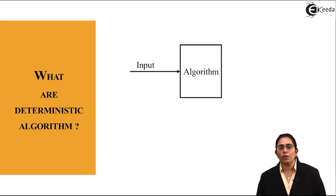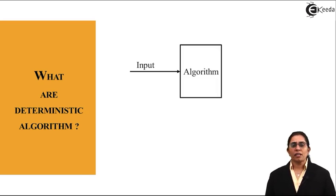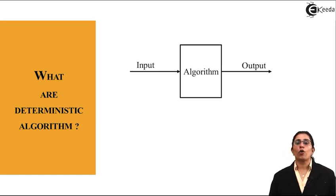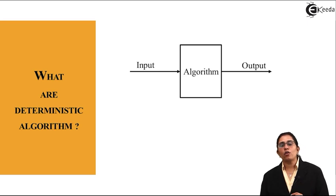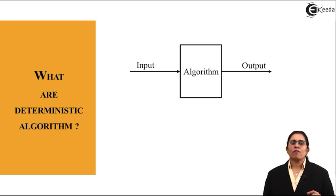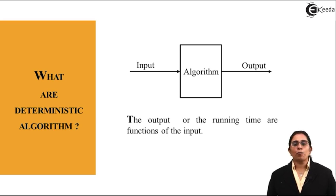Then what we get is a required or a definite output. This is a regular flow graph for a deterministic algorithm. This is given in a statement that the output or the running time are the functions of input.